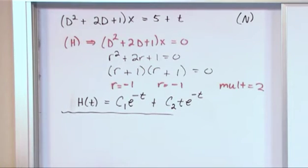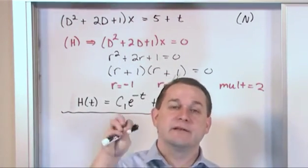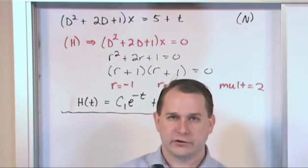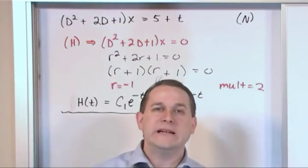Now the next thing we want to do, we have to realize what we're trying to do. The final solution, x of t, what we're trying to find is going to be the solution to the homogeneous version, h of t, plus some particular solution. Now we already have h of t, so we have about half of the answer. We need to find p of t.